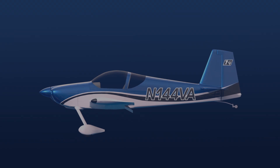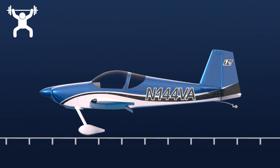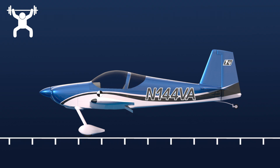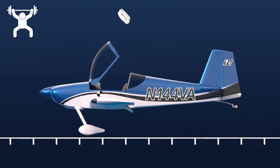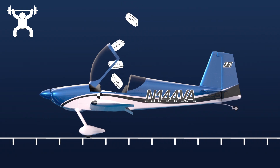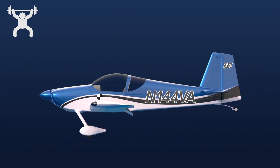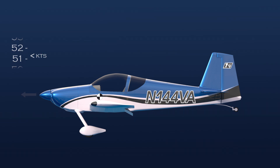Here's an example drop test setup. This test will be for limit load, level landing, and forward center of gravity, or CG. Limit load refers to the maximum load that a structure can safely carry in a real-world application. During this test, we need to simulate the aircraft traveling at or below stall speed, as well as having a high descent rate.